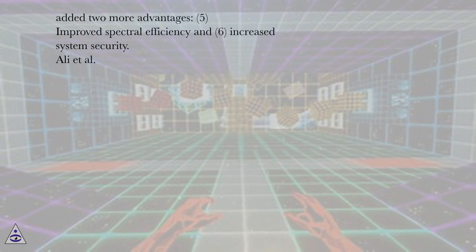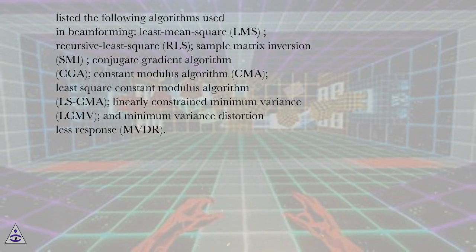Ali et al. listed the following algorithms used in beamforming: least mean square (LMS), recursive least square (RLS), sample matrix inversion (SMI), conjugate gradient algorithm (CGA), constant modulus algorithm (CMA), least square CMA (LSCMA), linearly constrained minimum variance (LCMV), and minimum variance distortion less response (MVDR).